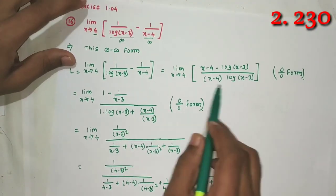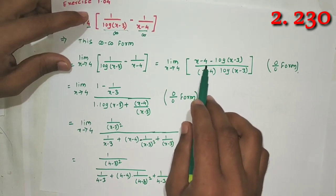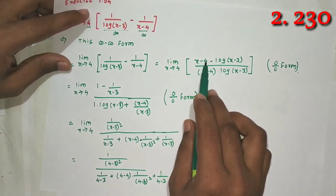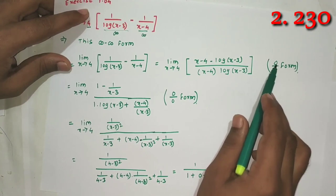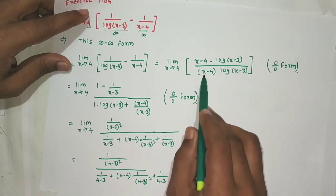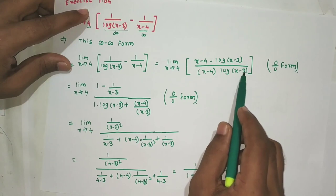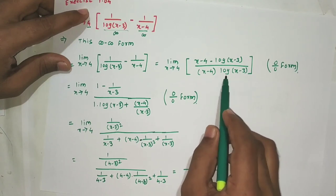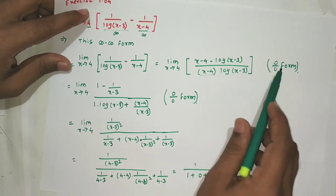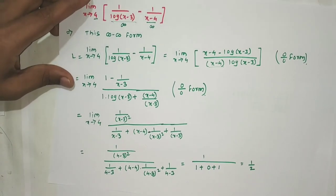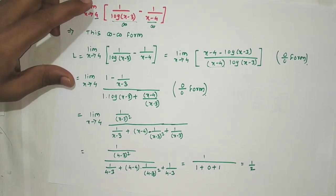After cross multiplication, the expression becomes [(x-4) - log(x-3)] / [log(x-3)·(x-4)]. Putting x=4: numerator gives 4-4-log(1) = 0-0 = 0, and denominator gives log(1)·(4-4) = 0·0 = 0. So this is 0/0 form, and we apply L'Hôpital's rule.